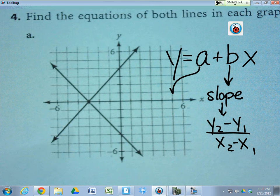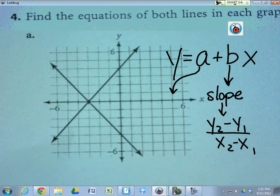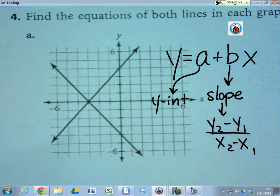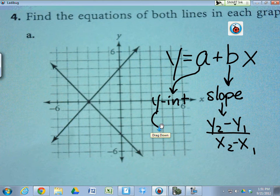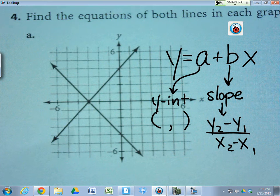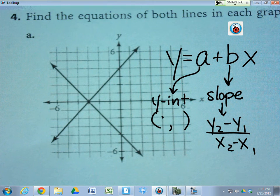The A is known as the Y-intercept. And that is found by looking at the line and seeing what the Y value is when X is 0.